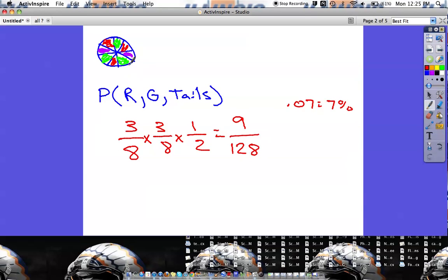So that means that if we spin this wheel once, spin it a second time, and then flip a coin, we're going to have a 7% chance of getting red, then green, then tails. So again, all I did was separate these out, list them out, and multiply them.